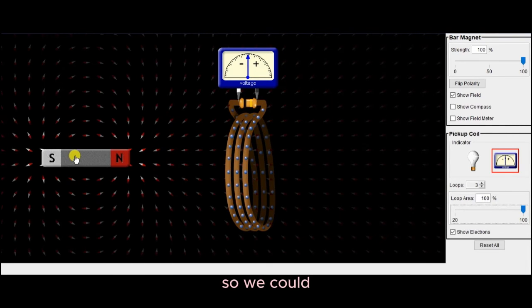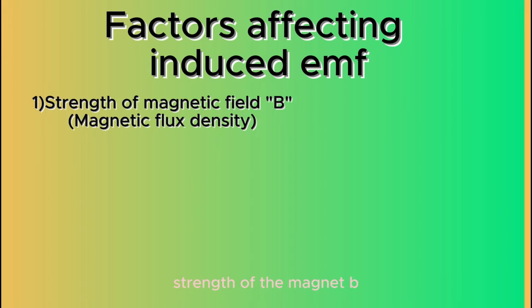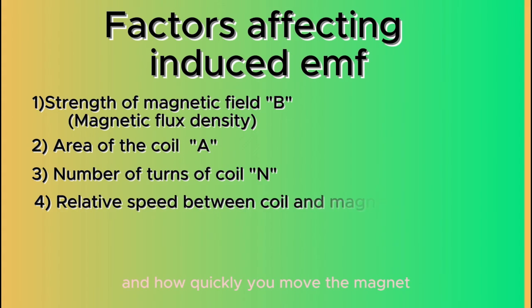So, we could then say that the induced EMF depends on, number one, strength of the magnet B, area of the coil A, number of turns in the coil of wire N, and how quickly you move the magnet. So, you divide all of these with the time.